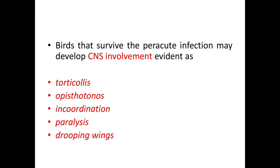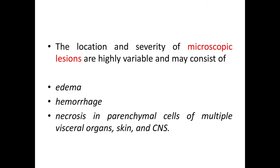Some birds that survive peracute infection may develop CNS involvement, evident as torticollis, opisthotonos, incoordination, paralysis, and drooping wings. The location and severity of microscopic lesions are highly variable and consist of edema, hemorrhage, and necrosis in parenchymal cells of multiple visceral organs, skin, and CNS.